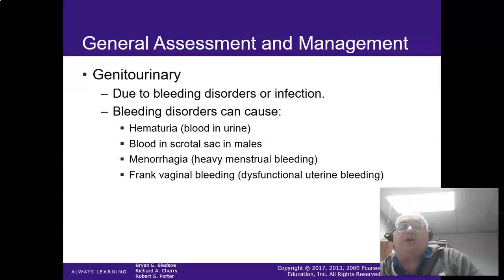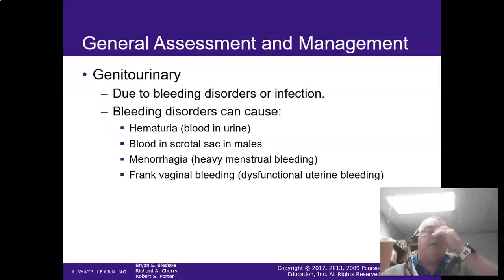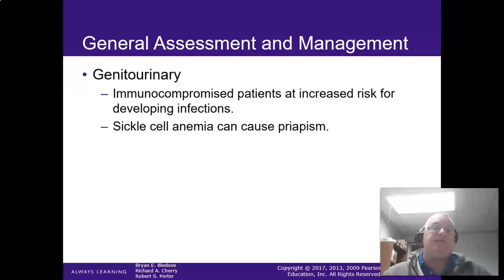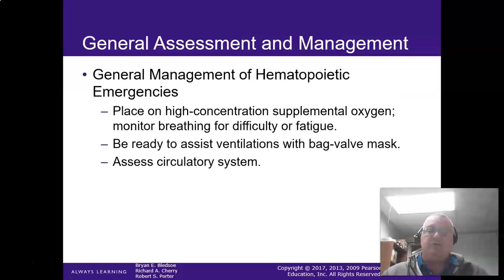Genitourinary problems: you can start getting blood in the urine, usually from the kidneys, going through the ureters. You can have blood in the scrotal sac in males, heavy menstrual flows — menorrhagia — for ladies. There can also be frank bright red blood, dysfunctional uterine bleeding from the vaginal area. Sickle cell can cause priapism — the blood can't drain out of the tubules. That is a very dangerous situation.